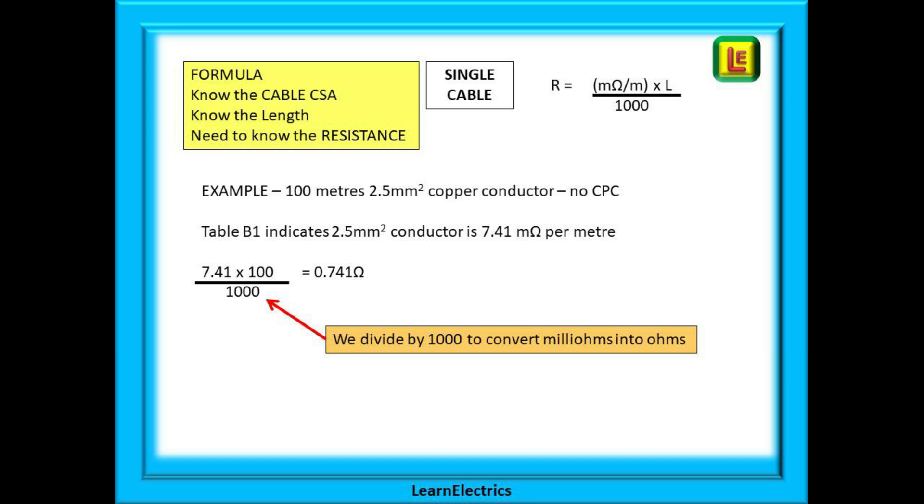Table B1 tells us that a 2.5 millimeter conductor on its own measures 7.41 milliohms per meter. So 7.41 multiplied by 100 gives 741 milliohms. Because this is calculated in milliohms, thousandths of an ohm, we must divide our calculated answer by 1000 to get back to ordinary ohms. So 741 milliohms divided by a thousand gives us an answer of 0.741 ohms. That is our resistance. If we were to measure it, that is the answer that we would hope to get.